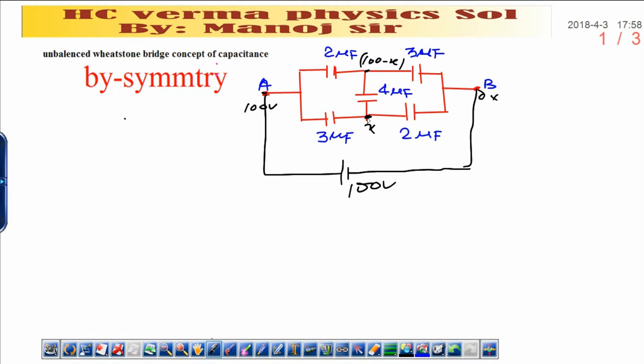Now we know at a particular junction, total charge, sum of the charge, as well as total charges remains conserved. If total charges remains conserved I can write...